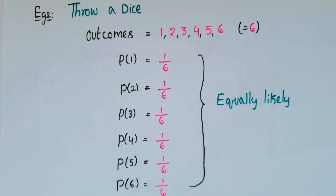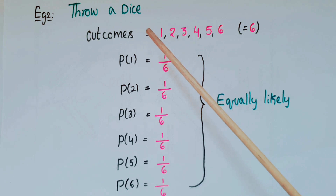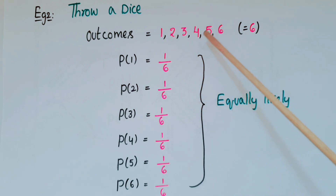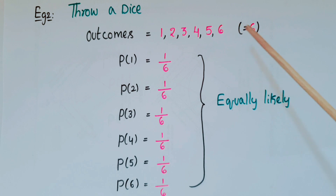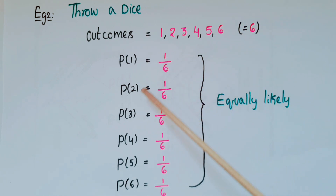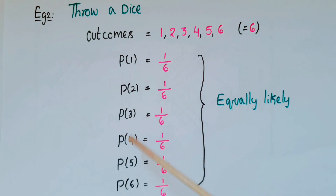Another example for equally likely cases: throw a dice. The outcomes are 1, 2, 3, 4, 5, or 6, so total outcomes are six. Probability of getting 1 is 1/6, probability of getting 2 is 1/6, and so on — probability of getting 6 is 1/6. So these are all equally likely.